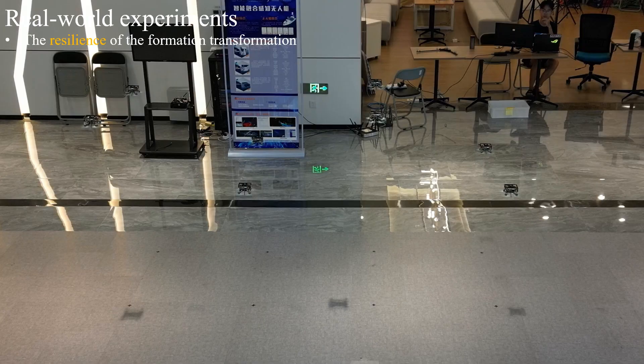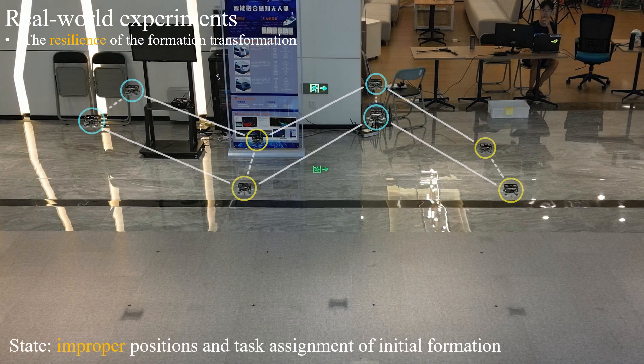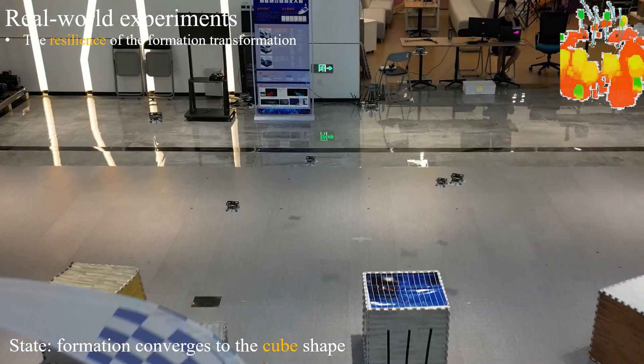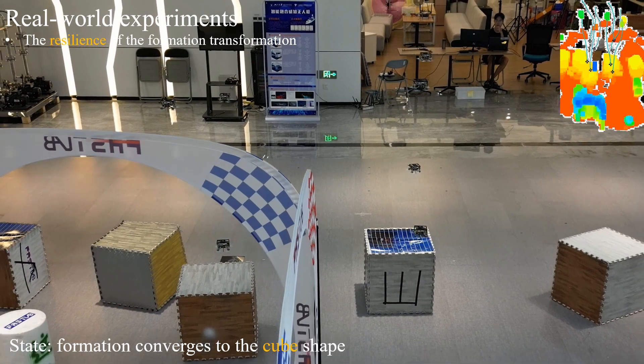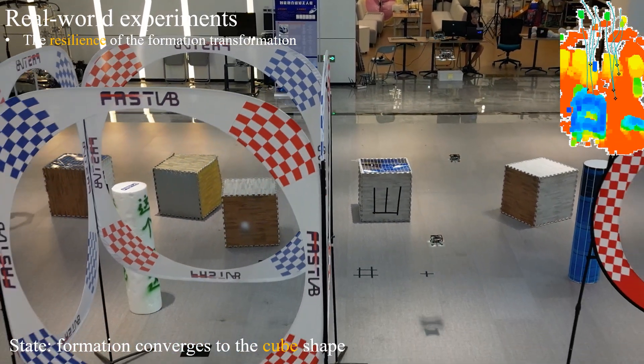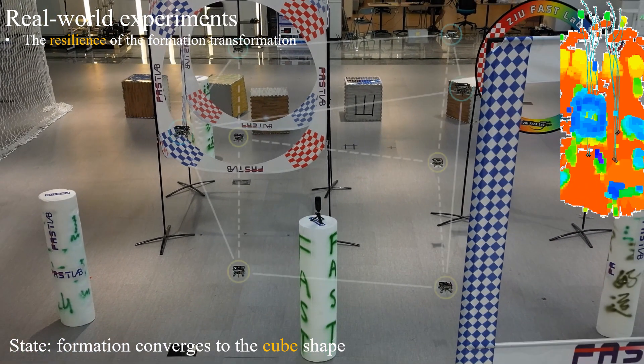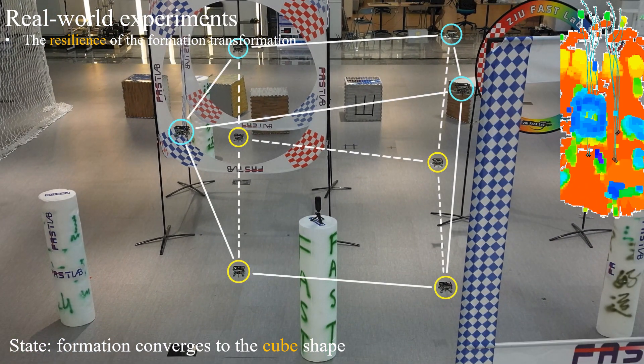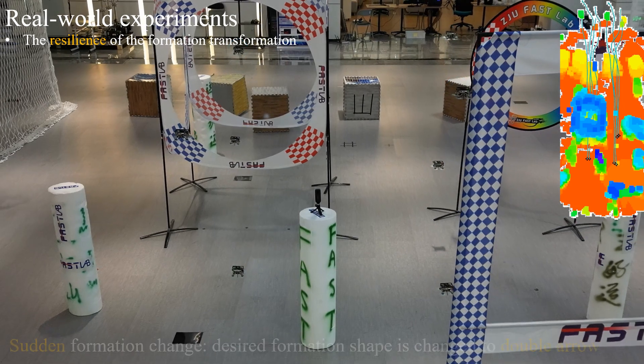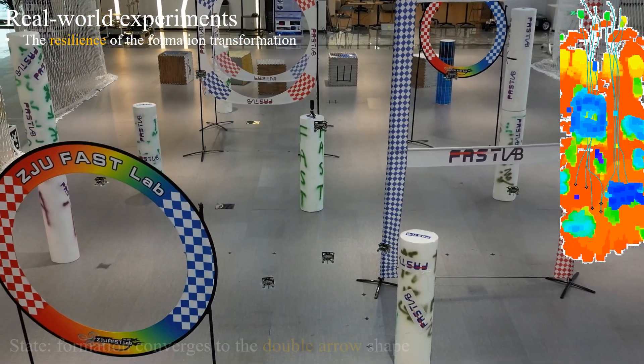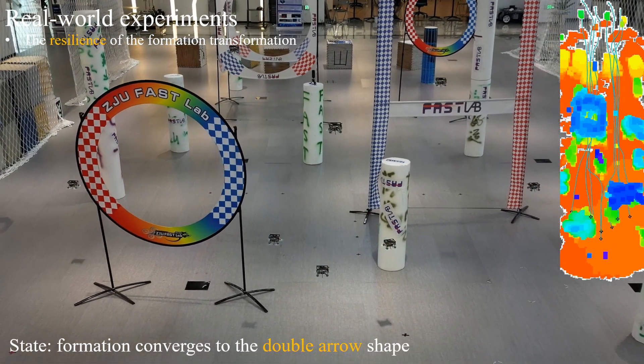In the second real-world experiment, we design a 3D formation shape transformation experiment. At the beginning, swarm robots navigate from unconverged initial positions and improper initial task assignments. However, the swarm robots quickly form a swarm consensus and make the formation shape converge to the desired square shape in seconds. After receiving a formation transformation command, the swarm robots quickly form a new swarm and finally converge to a double-arrow shape.